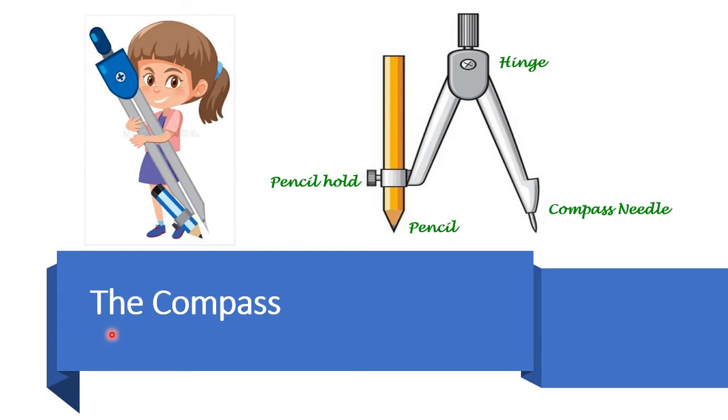Children, let's know about our compass. The joint which keeps two arms of compass together is called hinge. The pointed arm is called compass needle.